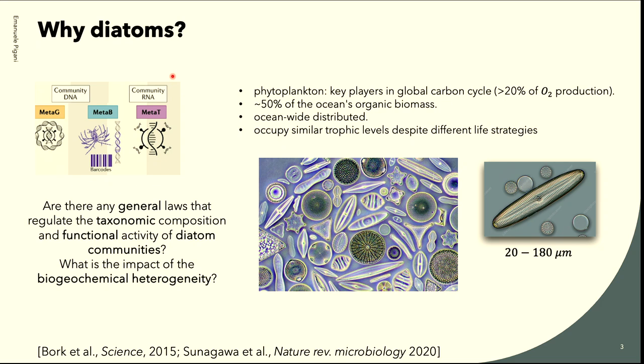We focus on diatoms mainly for two reasons. The first one is because they are important — they are a class of phytoplankton that play a key role in the carbon cycle, and also they are huge in terms of biomass. But the main reason here is that they are ocean-wide distributed, so if we want to infer some properties across all latitudes and temperatures, we need some species that are everywhere. And despite that, they adapt to different conditions but occupy similar trophic levels, making them an ideal candidate for investigating global patterns.